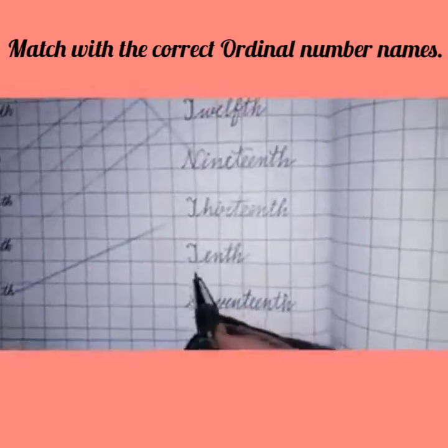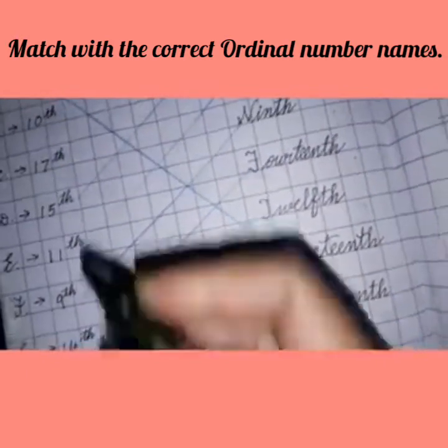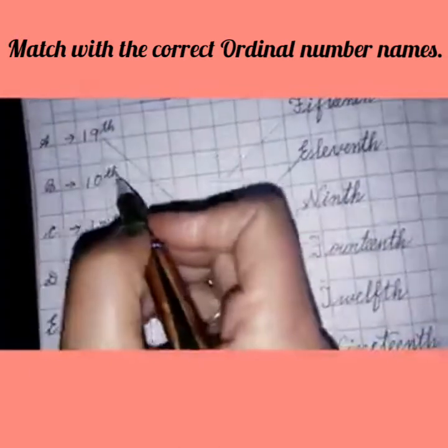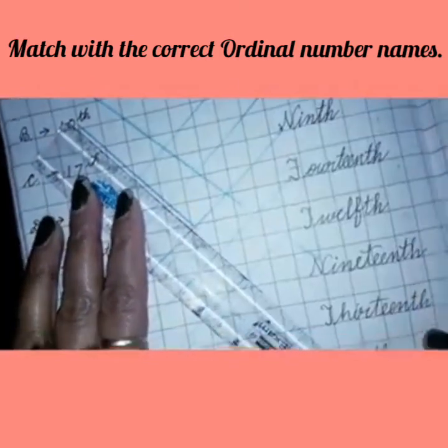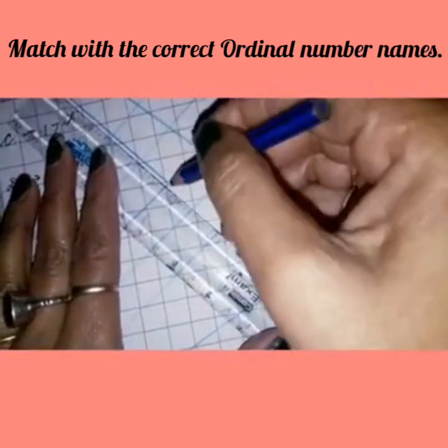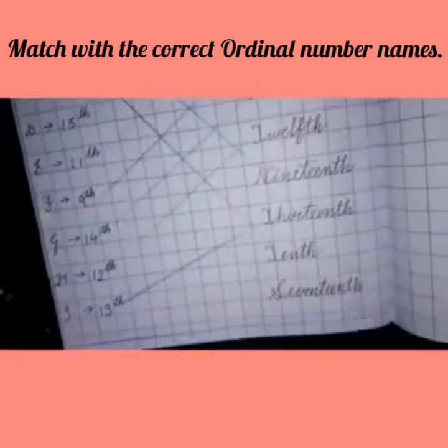Now children, write T-E-N-T-H 10th. So where is 10th in this row? This is 10th. So we have to match this. We will match like this. You can see it.